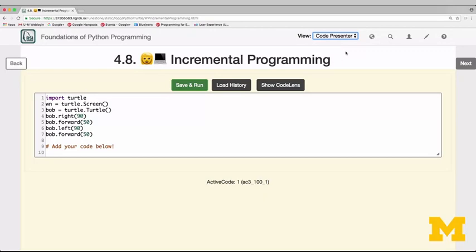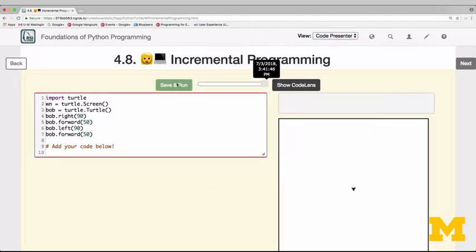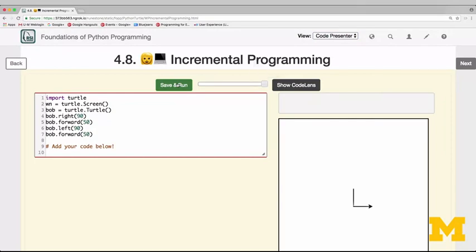But I'm now going to try to add to it in a way that says draw more and more of the house, and when we make mistakes, to catch them before there's too much code. So we've started with something that's working. Bob is going down and turning left. Let's complete that square. That should be pretty easy to do.